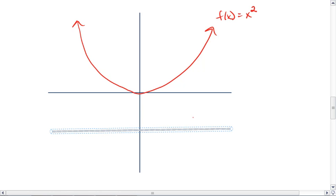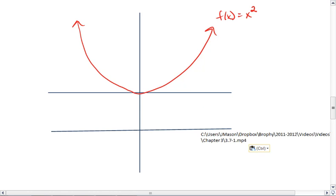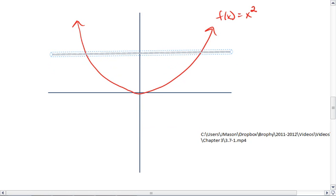Clearly, our red parabola passes the vertical line test. It does not, however, pass the horizontal line test. For we see that there are points where this horizontal line intersects the graph twice.